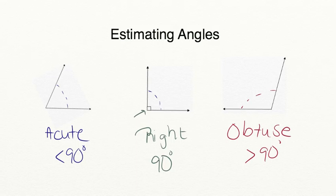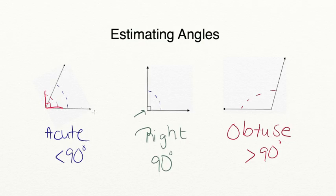One strategy you can use while estimating angles is to actually draw a right angle on the angle that you're estimating. Let's start with this acute angle right here. I'm going to draw a 90-degree angle on it — a 90-degree angle looks like the corner of a square. This 90 degrees is clearly larger than the smaller angle we're comparing it to, which means this angle must be acute.